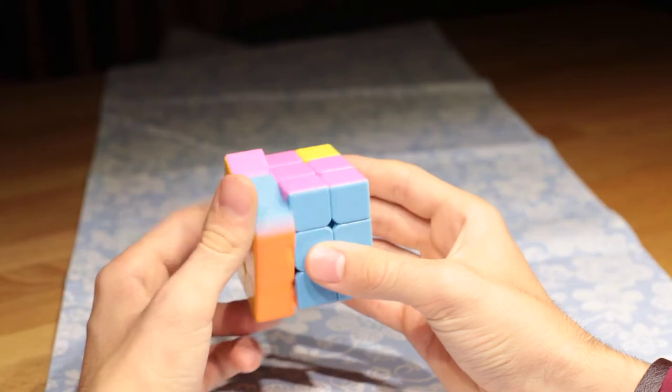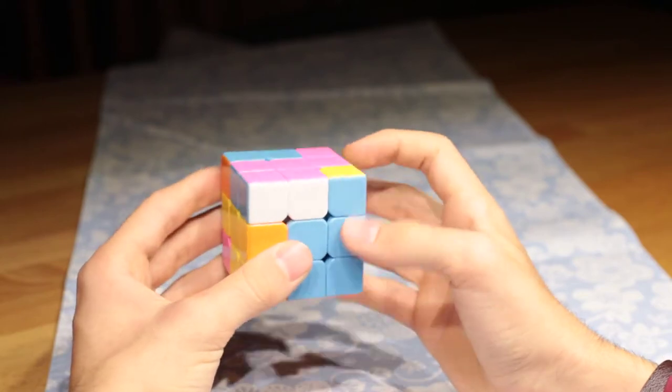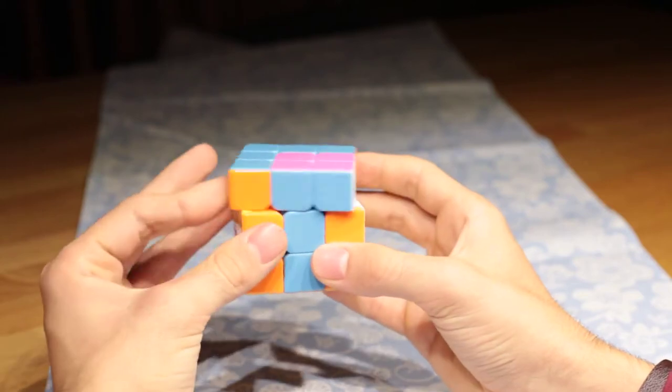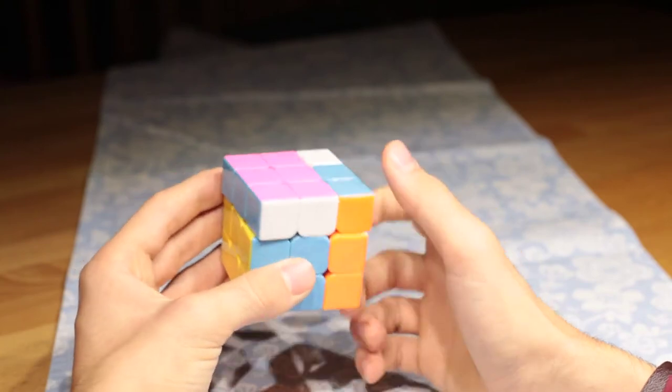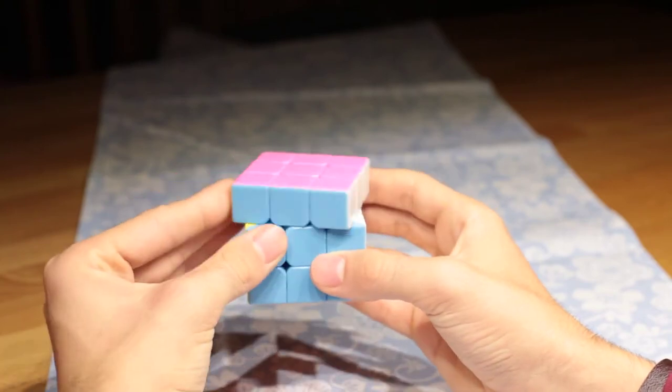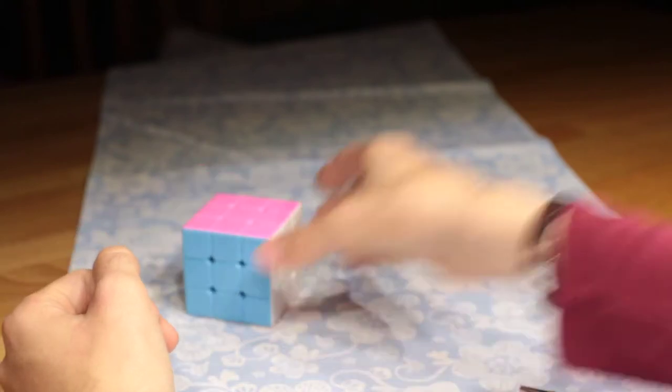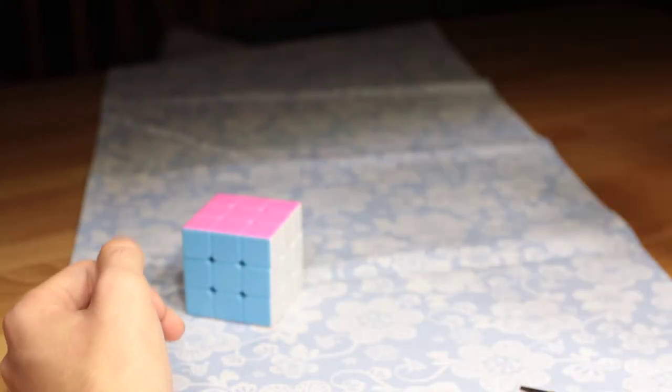The mirrored version looks like this. Up, left, up, right, down, left, down, right. This is how it looks on a Megaminx.